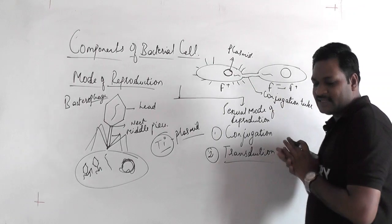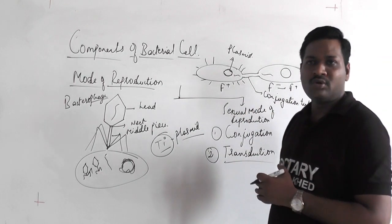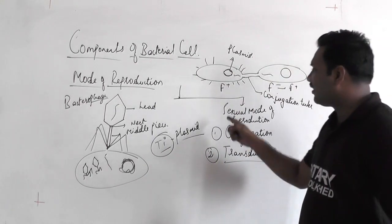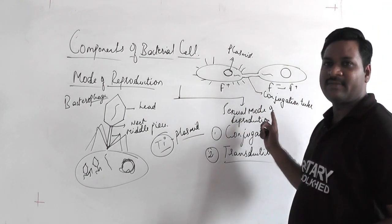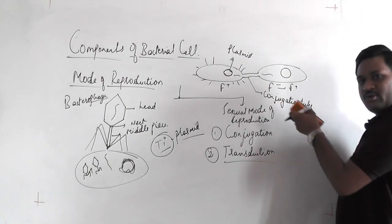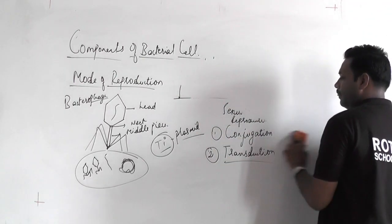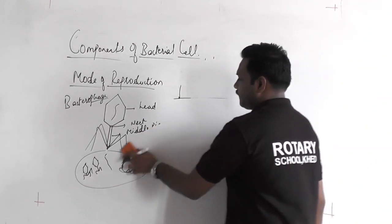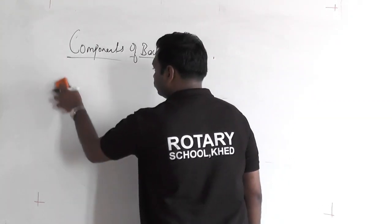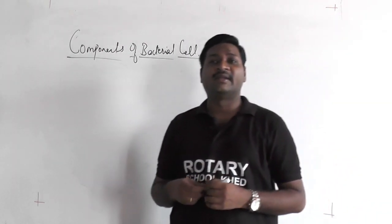This is how the mode of reproduction takes place in the bacterial cell. Later I will give you some notes to write in your notebook. If you have any difficulty understanding any concept, you can text me. You can pause the video and note down the points. There are different functions of the bacterial cell.